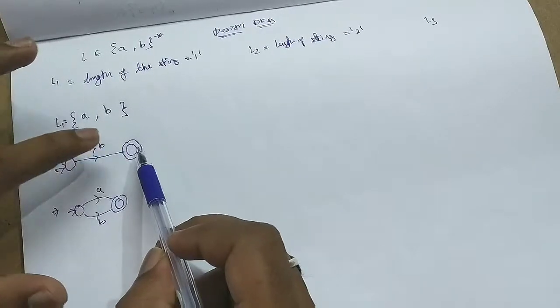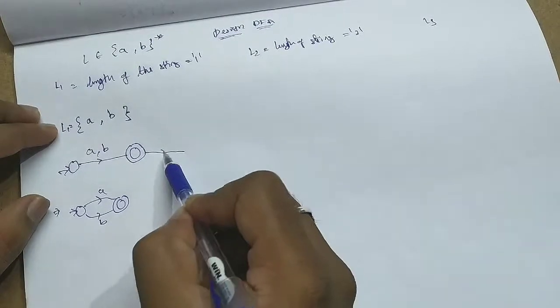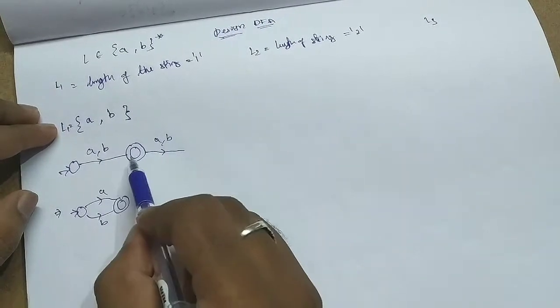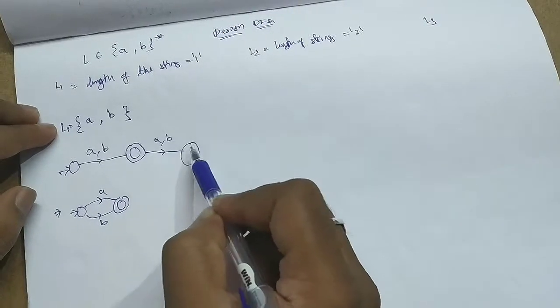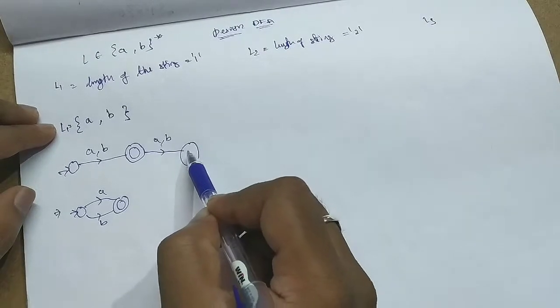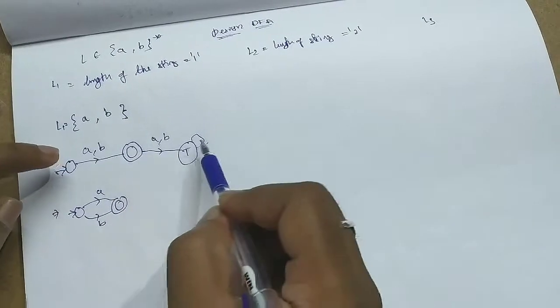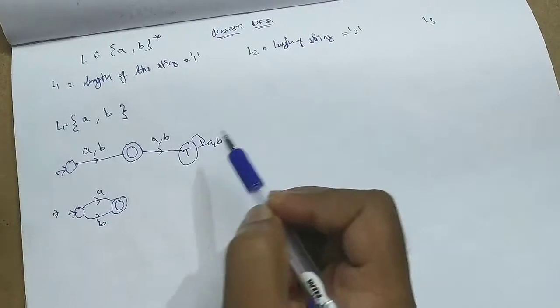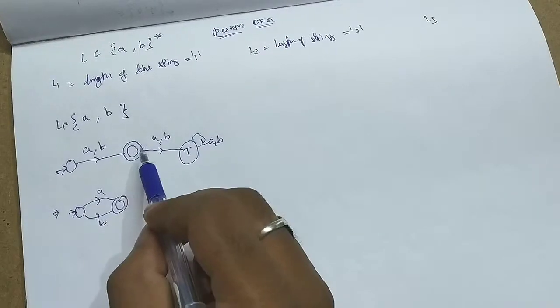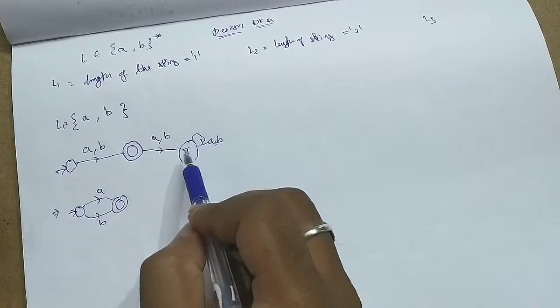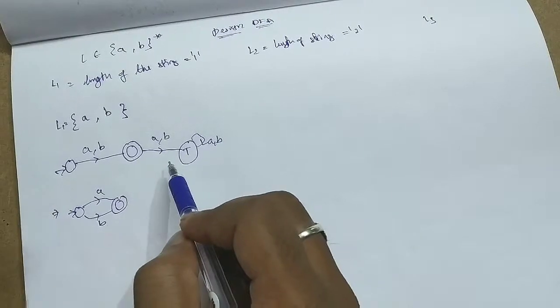If you get length 2, you have to reject. For rejection, you have to get them into trap. If the length is greater than 1, I will let them into trap. If length 1, it will accept. If it is more than length 1, it will go into trap. It never comes back and it remains in the non-final state. And it is the rejection.